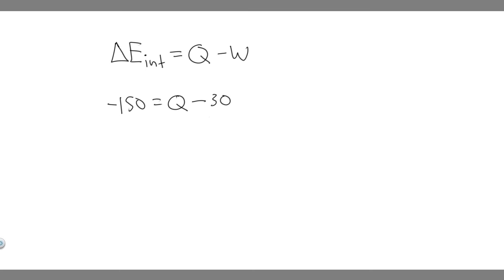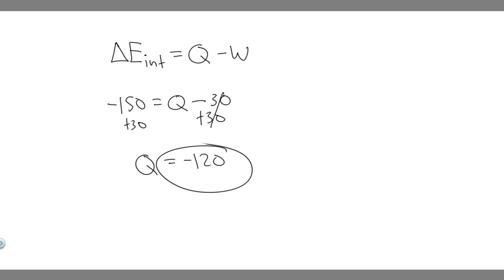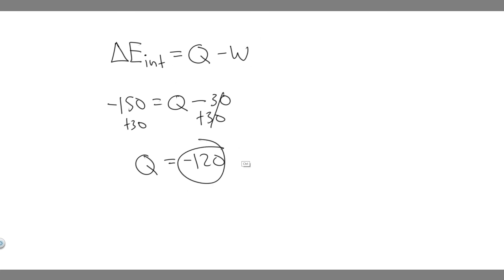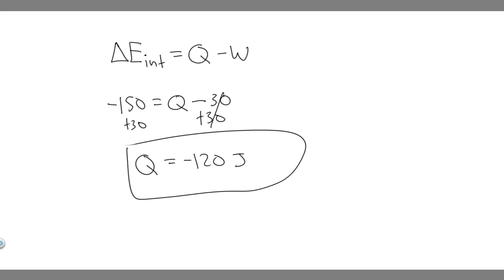What we can do now is just add 30 to both sides, and you're going to get Q is equal to minus 120. Keep in mind the units for every single one of these are joules, so your answer to this problem is going to be minus 120 joules.